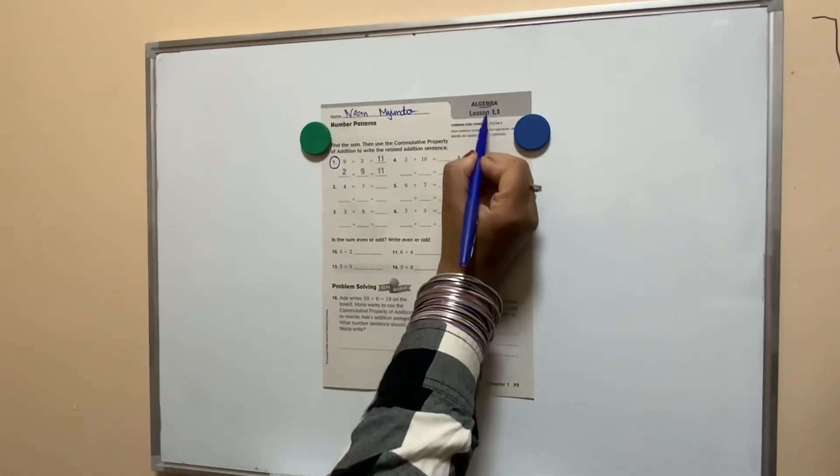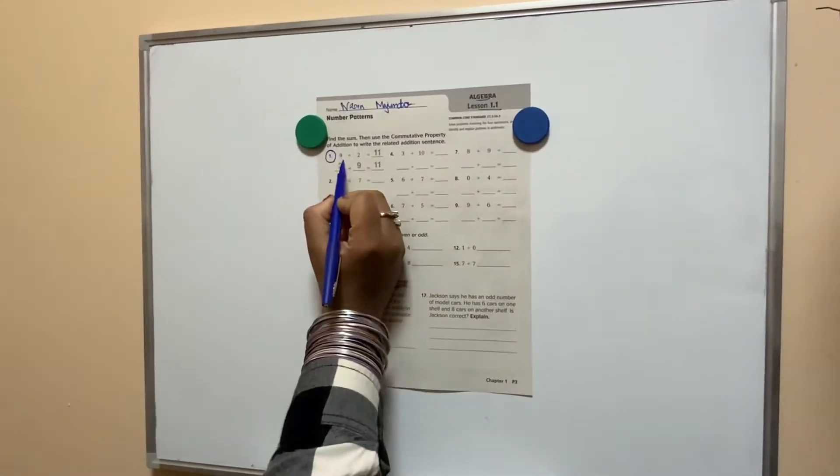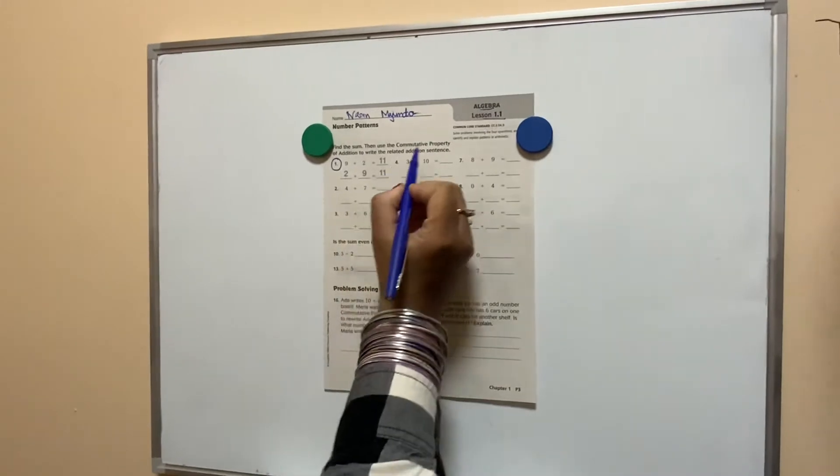Sum number 1. Algebra lesson 1.1. 9 plus 2 is given as 11.